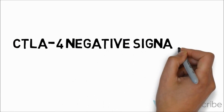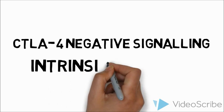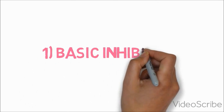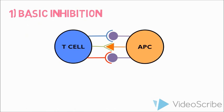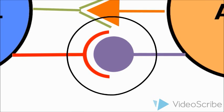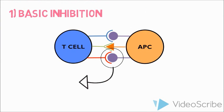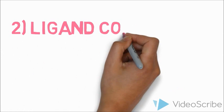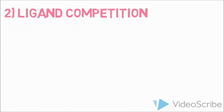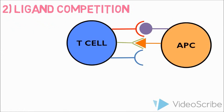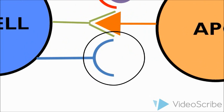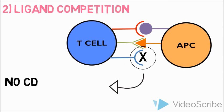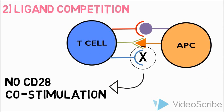Now on to CTLA-4 negative signaling. First, let's look at the intrinsic pathways. Basic inhibition occurs when both CD28 and CTLA-4 bind with the ligand CD80/86, resulting in an inhibitory signal. Next up, ligand competition: CTLA-4 outcompetes CD28 to bind CD80/86, resulting in no CD28 co-stimulation.